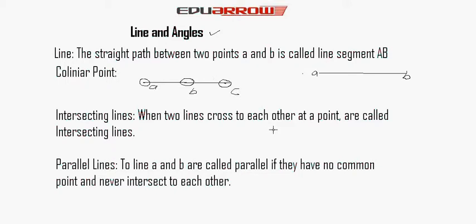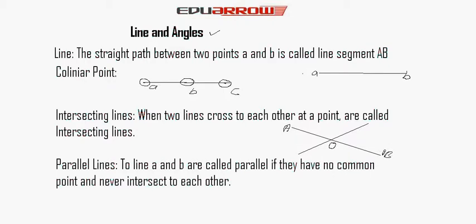When two lines cross each other at a point, they are called intersecting lines. Suppose line AB and line CD cross each other at a point O — this is AB and this is CD crossing each other at point O. So these lines are called intersecting lines.